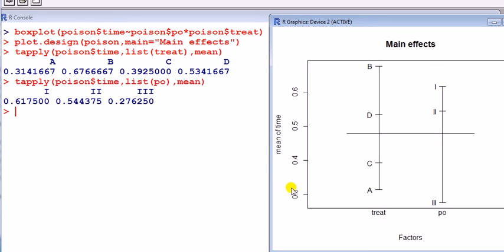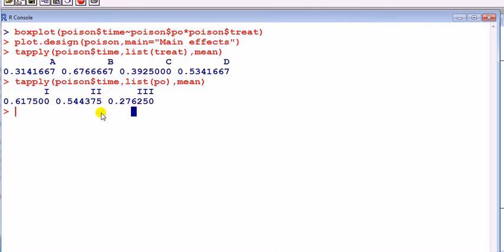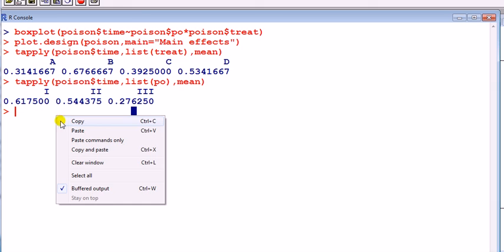We can do the same for poison. So we can see the same for poison. The most potent poison is level three, gives you a mean survival time of only 0.27, 0.28, say hours. Right, so that's the main effects plot.